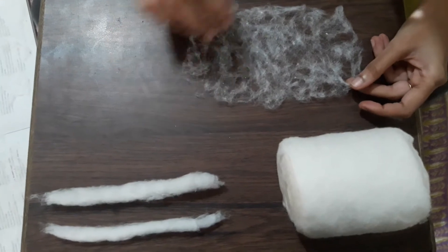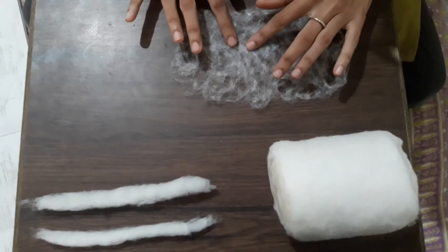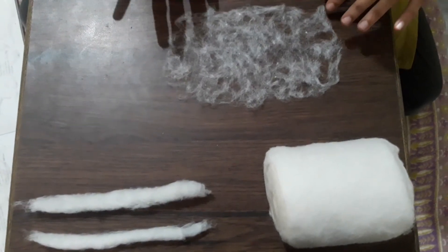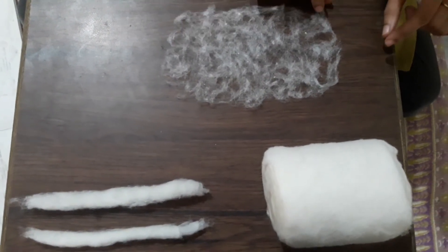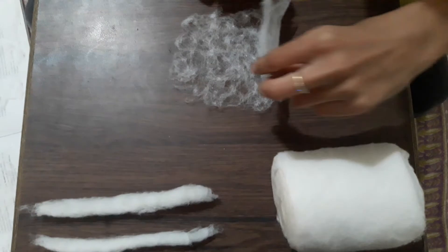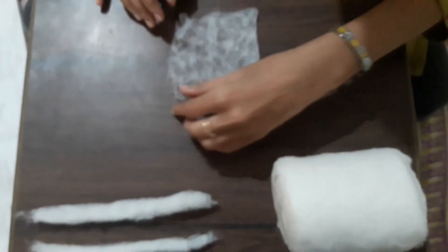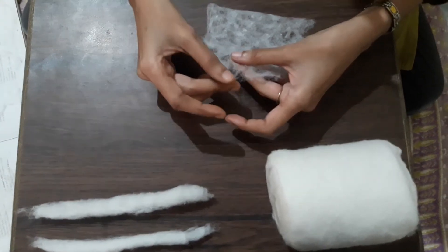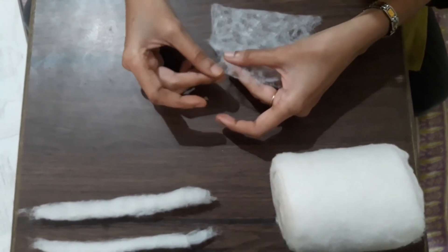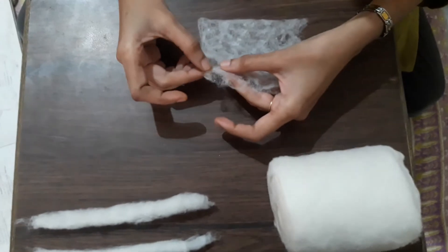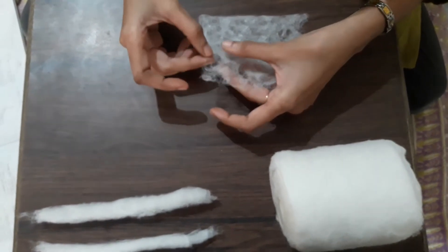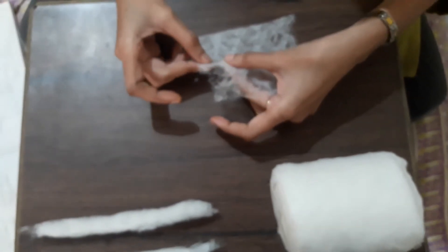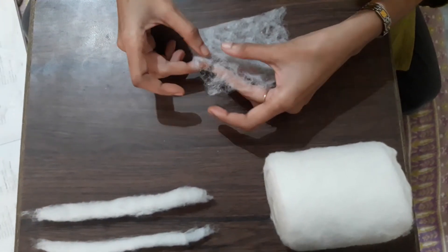So this is the first layer of sliver that I have made. I have sparsed out the fibers. Now this is the first layer. I fold it and again I start pulling them. This is the second time. We repeat this at least three times so that our fibers are very even in the layers. There are no clumps.